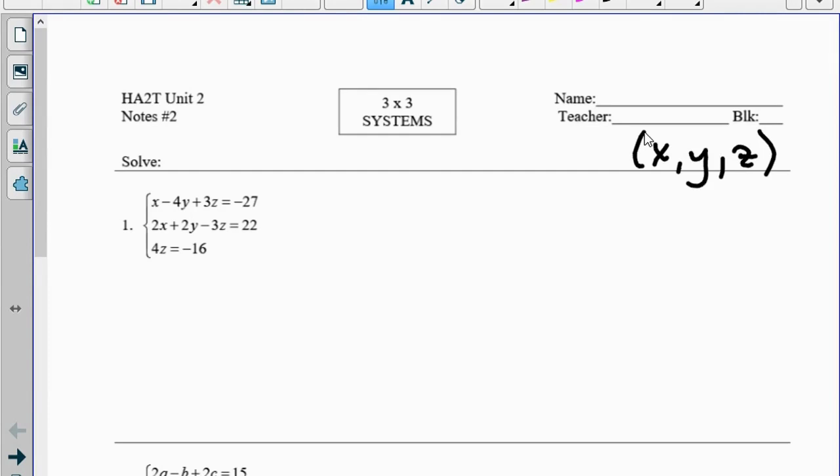Let's look at the first one. The first one they're giving us a gift because 4z equals negative 16. That basically enables us to solve for z right away, so z equals negative 4.